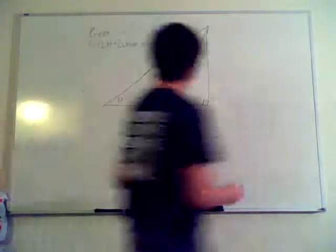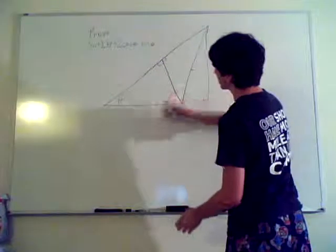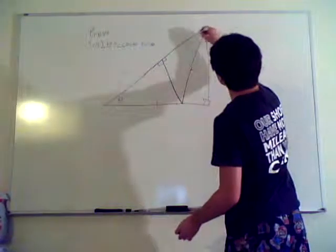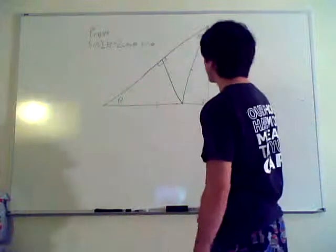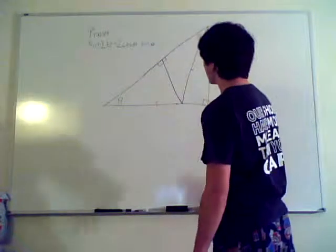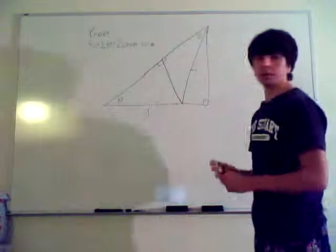The first thing you need to realize is this thing right here is the isosceles, which means this is this, and this is theta here as well. Now, pretend that this is 1, which means that this is 1. That's your first step.